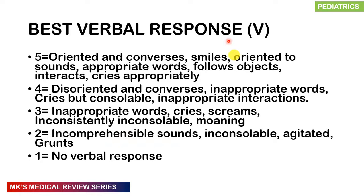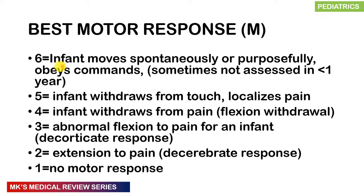Motor response is scored out of 6. Score 6 if the infant moves spontaneously, purposefully, or obeys commands. Note that children below age 1 are not scored out of 6, so their maximum total is 14 rather than 15. Score 5 if the infant withdraws from touch or localized pain. Score 4 for withdrawal from pain or flexion withdrawal. Score 3 for abnormal flexion to pain — a decorticate response. Score 2 for extension to pain — a decerebrate response. Score 1 if there is no motor response.